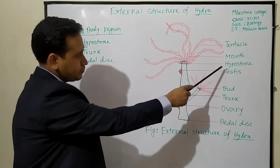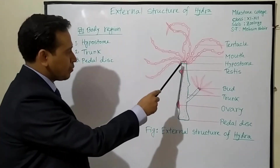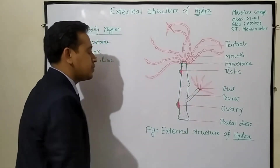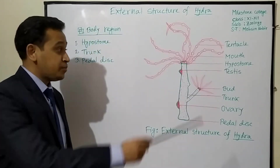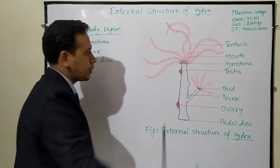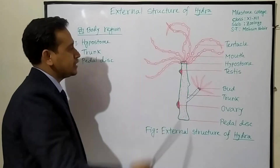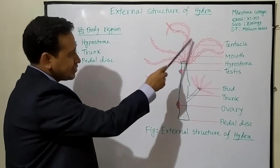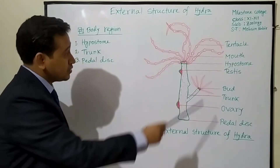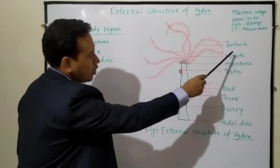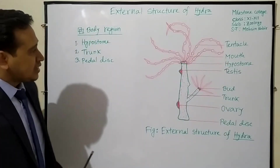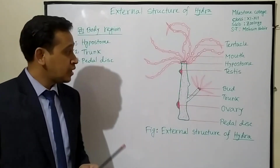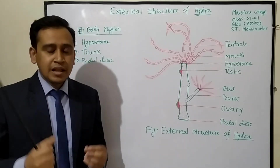The first region is the hypostome. The oral end of the body bears a conical elevation which is called the hypostome. It bears a round-shaped mouth. The hypostome is surrounded by 6 to 10 slender, hollow, thread-like processes called tentacles. The tentacles of the hypostome help in prey capture and locomotion, and the mouth helps in engulfing food.